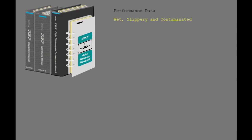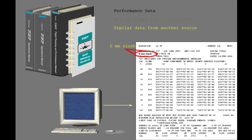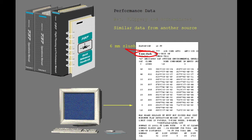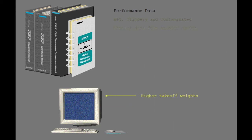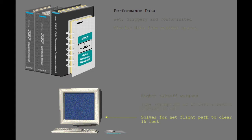Boeing also provides wet, slippery, and contaminated runway performance data to airlines in the form of a computer program. Airlines may choose to use this program to create runway analysis for any of the previously discussed cases and for dry snow of up to 4 inches. In many cases, the computer program will result in higher takeoff weights because of the increased precision in the calculation. The program uses the same assumption of a reduced screen height of 15 feet, allows credit for reverse thrust, and will result in the net flight path clearing the obstacle by at least 15 feet.